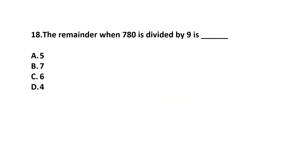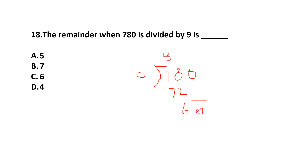Question number 18. The remainder when 780 is divided by 9 is? Option A: 5, Option B: 7, Option C: 6, Option D: 4. Dividing 780 by 9 — 9 eights are 72, bringing down gives 60, and 9 sixes are 54, giving remainder 6. Since 6 is less than 9, the remainder is 6. Correct answer is Option C.